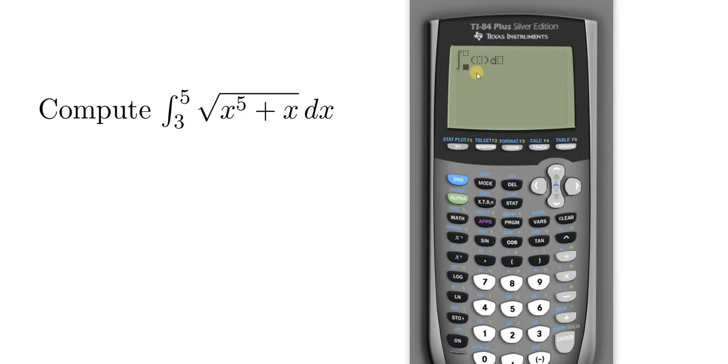And then this beautiful screen shows up. If you have a different model calculator, like an older one, it won't look quite as nice. If that's the case, then you basically enter your integrand, x, 3, and 5. So it's integrand, x, 3, and 5, and you put commas in between them.